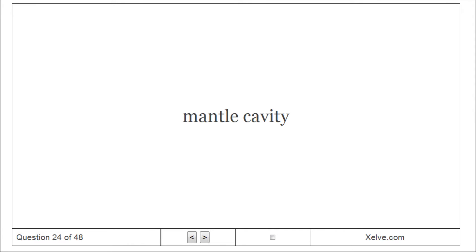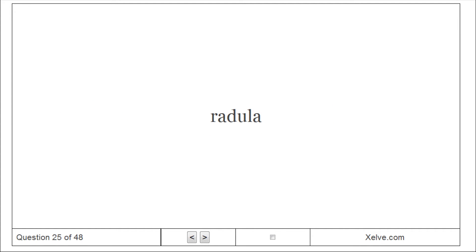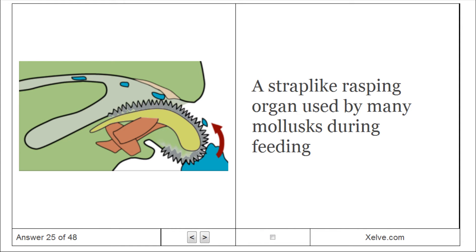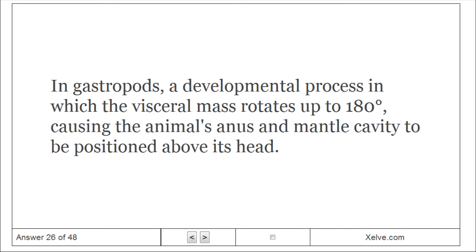Mantle cavity. A water-filled chamber that houses the gills, anus, and excretory pores of a mollusk. Radula. A strap-like rasping organ used by many mollusks during feeding. Torsion. In gastropods, a developmental process in which the visceral mass rotates up to 180 degrees, causing the animal's anus and mantle cavity to be positioned above its head.